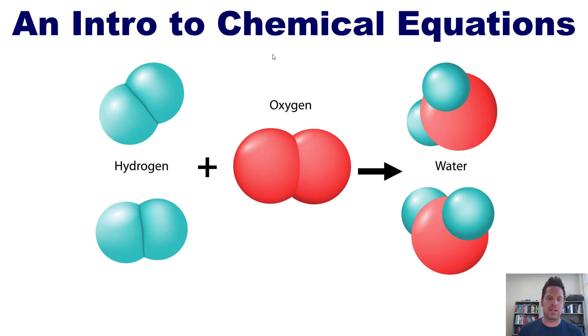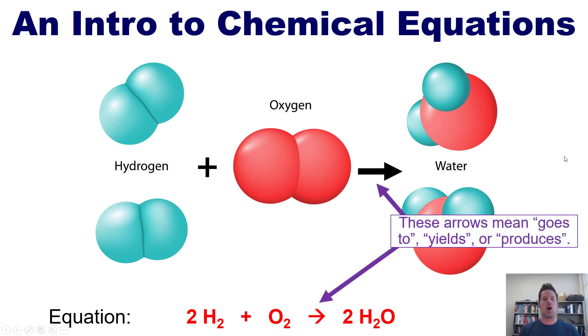In chemistry though, we don't typically draw out models like these all the time. We usually write them in a more abbreviated form called a chemical equation. The chemical equation for this would be as follows: 2H2 plus 1O2 turn into 2H2O. And as it turns out, the arrows right here are read when we read a chemical equation as goes to, yields, or produces. Thus, the correct way to read this would be 2H2 plus 1O2 yield, goes to, or produces 2 water molecules. Make sense? Good.